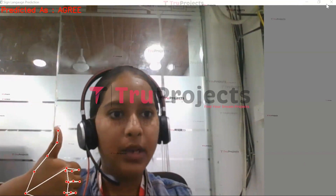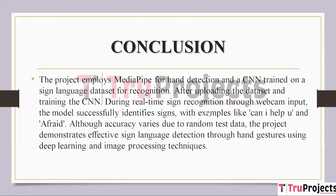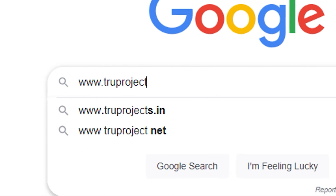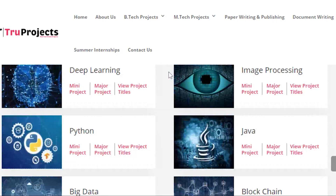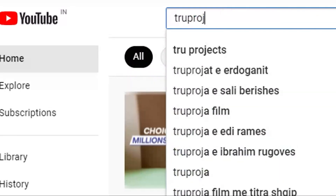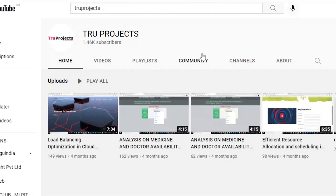The conclusion of the project: the project uses a CNN trained on a sign language dataset for recognition and MediaPipe for hand detection. After training the CNN and uploading the dataset, the model effectively recognizes signs during real-time sign recognition using webcam input, with examples including 'can I help you', 'afraid', etc. The project shows efficient sign language detection using hand movements utilizing deep learning and image processing techniques. However, performance fluctuates due to random test data. For more projects please visit our website www.trueprojects.in and subscribe to the True Projects YouTube channel.